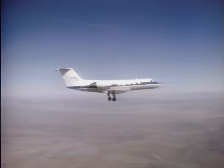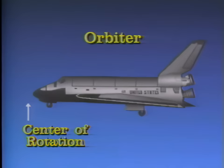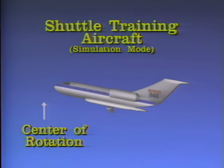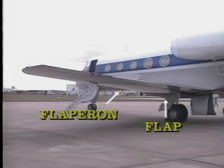In an airplane, the center of rotation is in the middle, causing the pilot to feel a rising sensation whenever the nose rises. The center of rotation in the orbiter, however, is at the front, so the pilot feels a falling sensation when the nose rises. To simulate this feeling, the Gulfstream's aero surfaces have been modified with Direct Lift Control, or DLC. The DLC causes the flap and flaperon to work together. The flaps on the STA can move up or down at 50 degrees per second, simulating the movement of the orbiter.